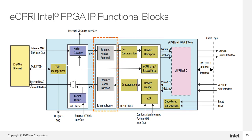Next is the Ethernet frame section. For outgoing eCPRI messages on the transmit path, the Ethernet header insertion block adds an Ethernet header to eCPRI messages. It can optionally add IPv4, IPv6, or UDP headers to the packet according to how the IP core is configured. For incoming eCPRI messages on the receive path, the Ethernet header removal block removes the Ethernet header from the eCPRI message, and can optionally remove IPv4, IPv6, and UDP headers as well.